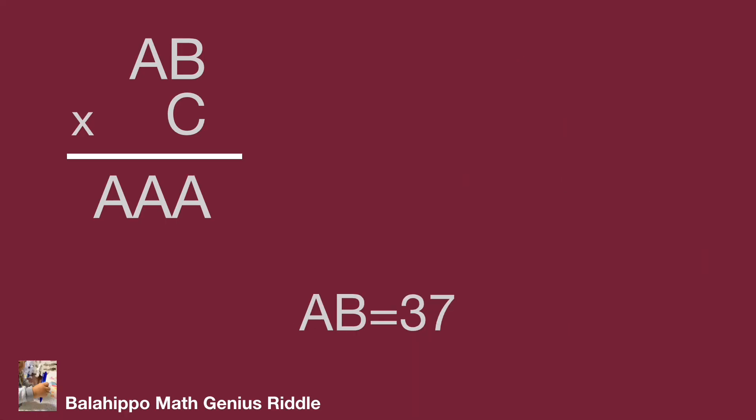While AB equal to 37, so we get 37 times C equal to 333. Then we get C equal to 9. That's the result. So A equal to 3, B equal to 7, and C equal to 9.